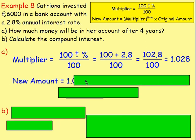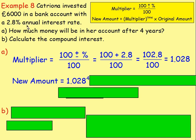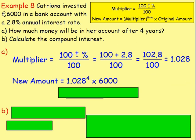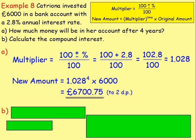You do the 1.028 to the power of 4 because it's 4 years — it is an annual interest rate, so each year you're getting the 2.8%: first year 2.8%, second year 2.8%, third year 2.8%, fourth year 2.8%. So it's the multiplier to the power of 4. You then multiply that by the original amount — she invested £6,000 — so we multiply that by the 6,000. The amount in Katrina's account is £6,700.75.